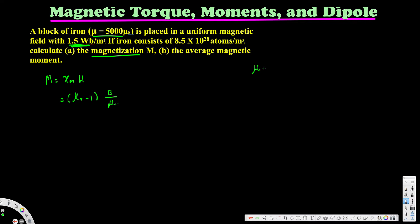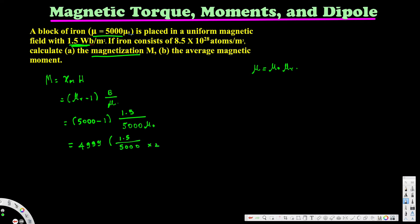The equation for μ is μ equals μ₀ times μr, so since μ equals 5000μ₀, μr must be 5000. Plugging in: M equals (5000 minus 1) times 1.5 divided by (5000μ₀). Simplifying this gives us 1.194 times 10 to the power of 6 amperes per meter. That is the magnetization.